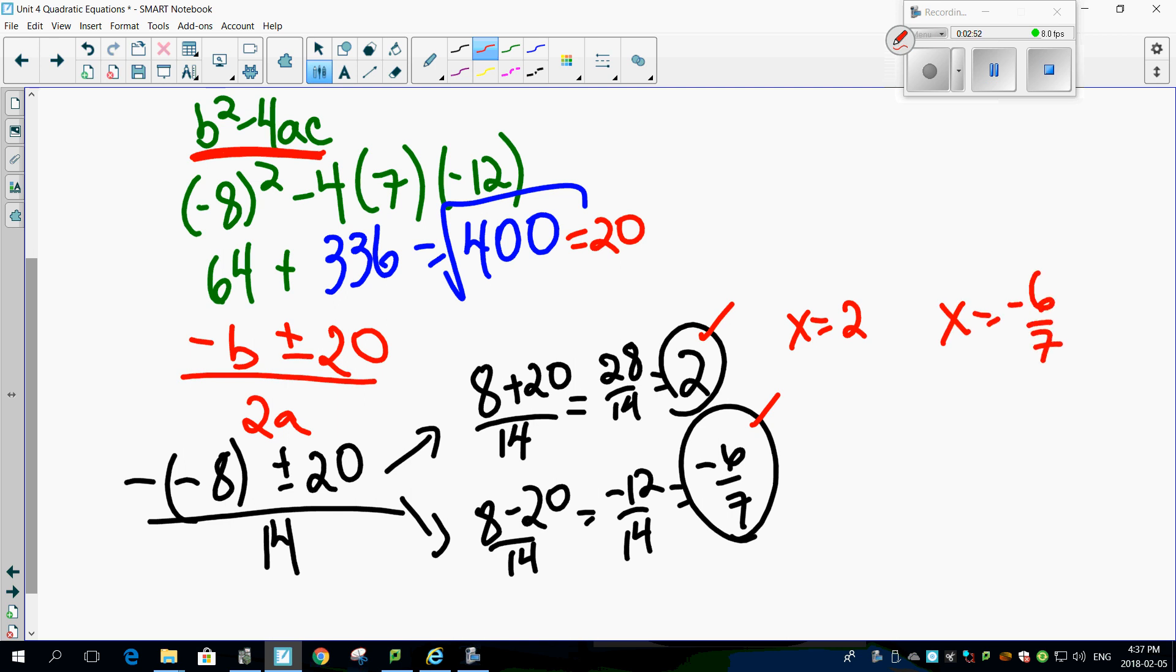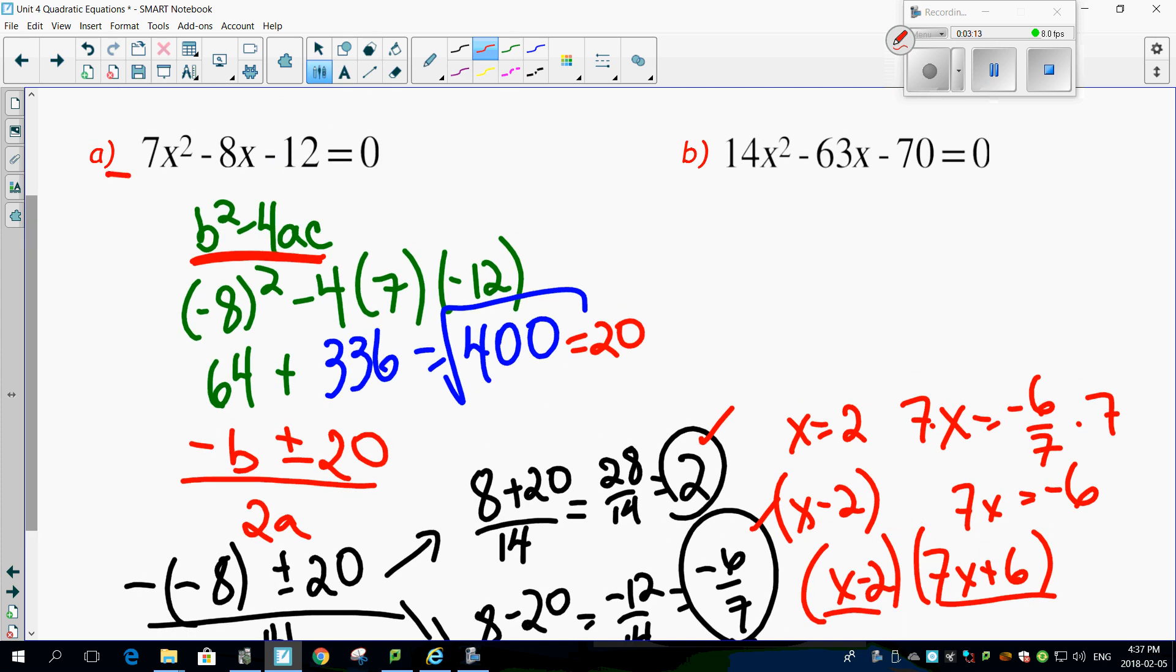X minus 2 is one of your factors. Bring the 6 7ths back by multiplying this by 7, and that by 7, giving you 7x equals minus 6. Bring the 6 over, giving you 7x plus 6. There's your two factors. That's this original equation factored using the quadratic formula. And I showed you that in a previous podcast, but this is a little bit simpler one with nicer numbers.